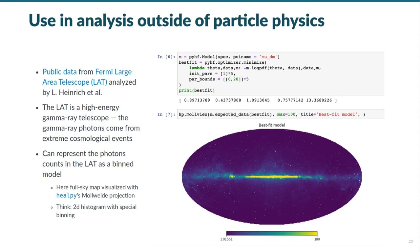We'd also like to think that the uses of PyHF are not only found inside of high energy physics. Here we see public data from the Fermi Large Area Telescope analyzed with PyHF in a Jupyter notebook. The LAT is a high energy gamma ray telescope on the Fermi gamma ray space telescope spacecraft, used to observe gamma ray photons coming from extreme cosmological events. We can represent the photon count in the LAT as a binned model, such that after constructing a model in PyHF and performing a maximum likelihood fit, the results can be visualized with HEALPix. Here we can view the resulting mapping as a two dimensional histogram with special binning choices. While none of the PyHF core dev team works in astrophysics, we're interested to see what overlaps might exist for use of PyHF.